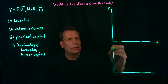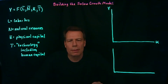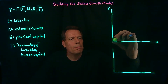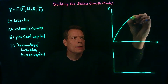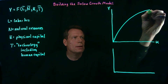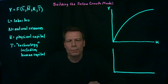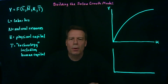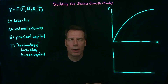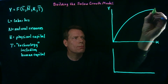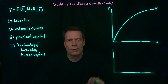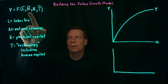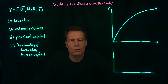So initially, as we start putting capital into this economy, we're going to get a big increase in GDP. But as we add more and more capital, the additional increments to GDP get smaller and smaller. We get this curved shape because of the law of diminishing marginal product, representing the level of GDP as capital changes when we hold labor, natural resources, and technology fixed.